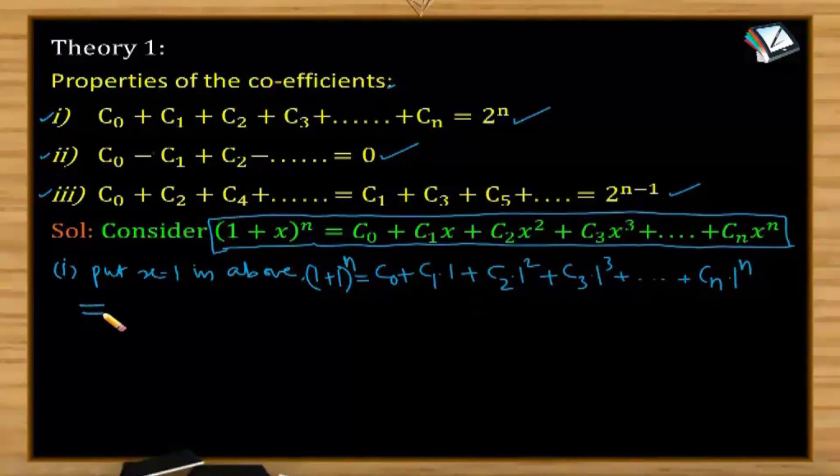Writing LHS as RHS, we get C0, C1 into 1 as C1, C2 into 1 square as C2, C3 into 1 cube as C3 and so on, Cn into 1 power n is 1.